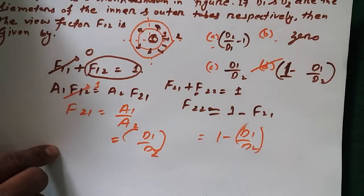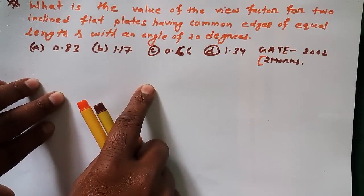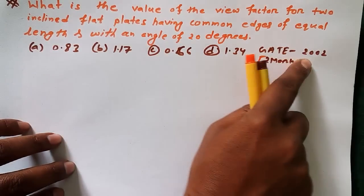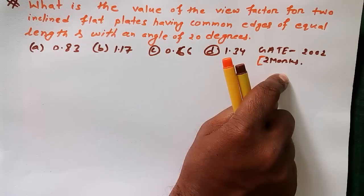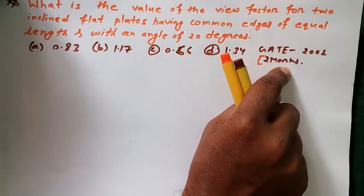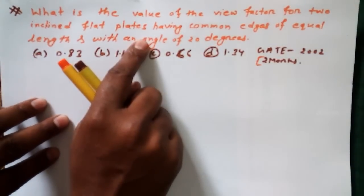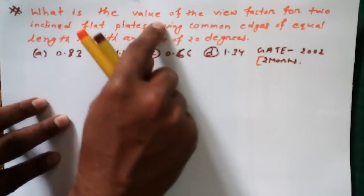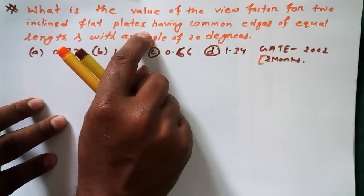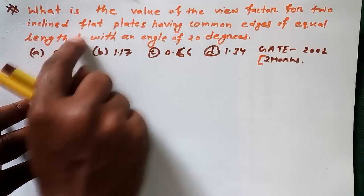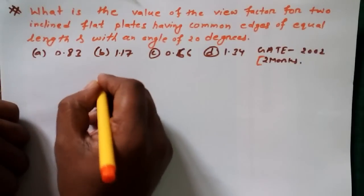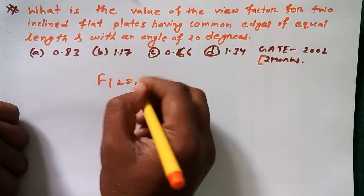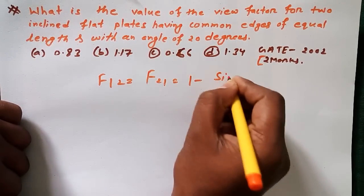Now let's move to another question — this one is a little bit tricky. This is also a GATE 2002 two-mark question, which shows how important view factor questions are for GATE. The question asks: what is the view factor for two inclined flat plates having a common edge of equal length and with an angle of 20 degrees?